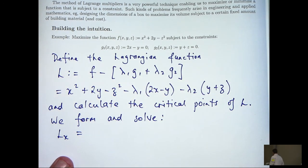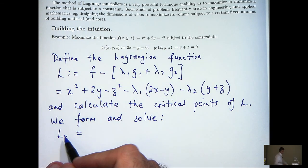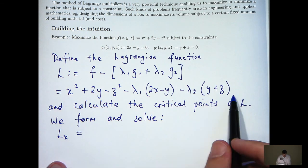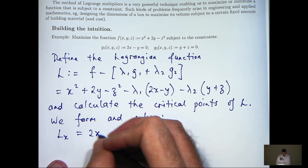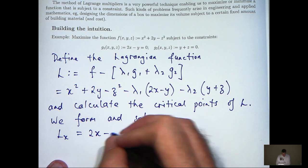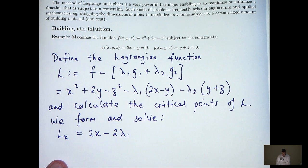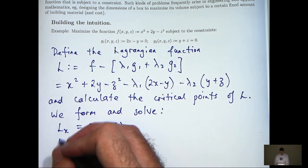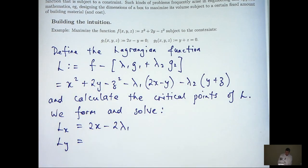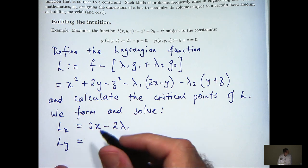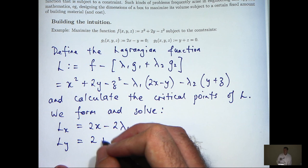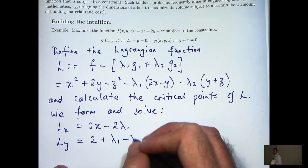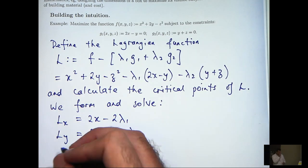By a subscript here, I mean dL/dx — the partial derivative of L with respect to x. So we differentiate with respect to x, holding everything else constant, and we'll get something like this. Similarly, L sub y is the partial derivative of L with respect to y. And L sub z.